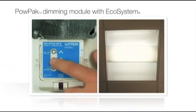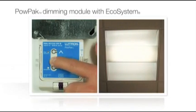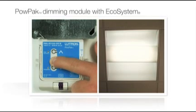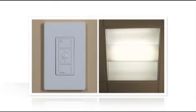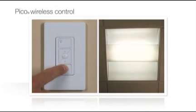First, press and hold the O button on the PowPak Dimming Module with Ecosystem for 6 seconds. Second, hold the OFF button on each Pico Wireless control for 6 seconds.